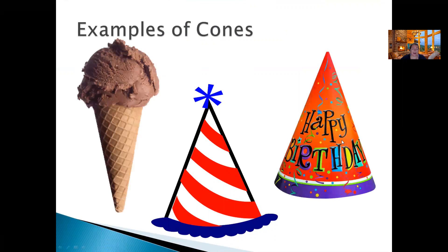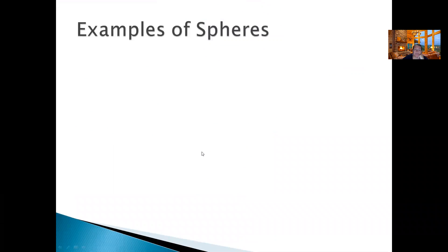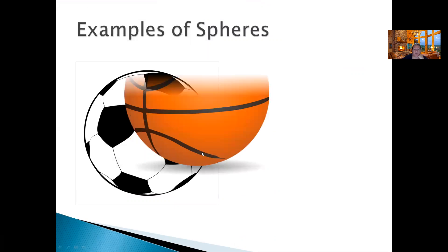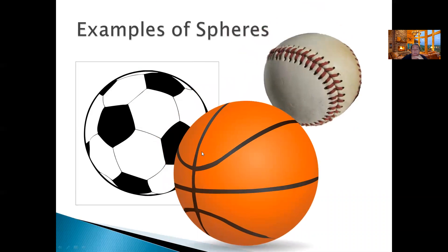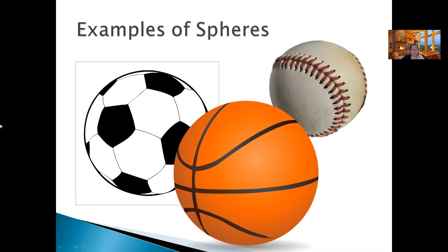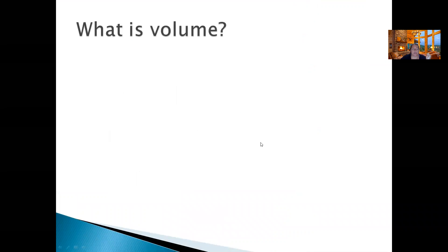Cones — just think of an ice cream cone or a hat. A circle on the bottom or the top and then goes to a point, like a triangle. And then spheres — soccer ball, baseball, basketball, those are spheres. So it's just a 3D circle, basically.